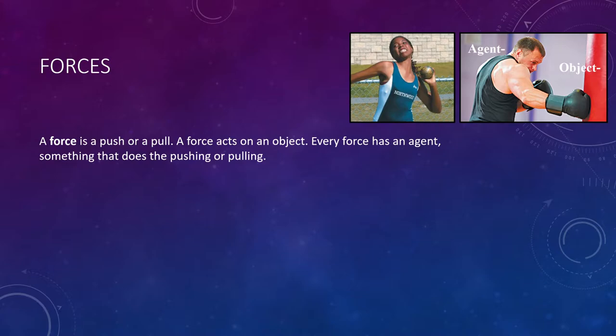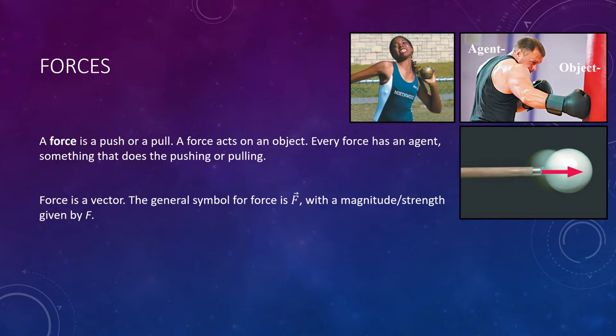Now, a very important concept to understand is that force is a vector. It has a direction. You're always going to be pushing or pulling something in a particular direction. So we say force is a vector as a result. And we represent force, just the general force, not any specific one, with the capital letter F. And note that the arrow above it indicates it's a vector. The magnitude, in other words, the strength of the vector, is just given by capital F without the arrow.